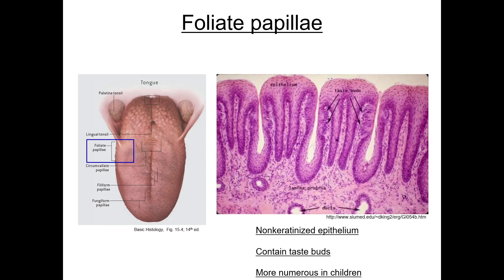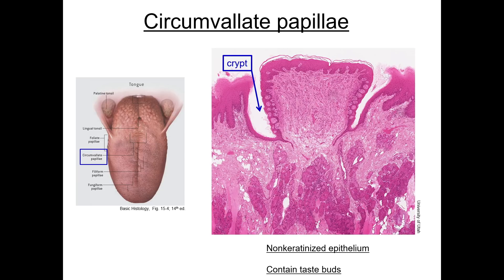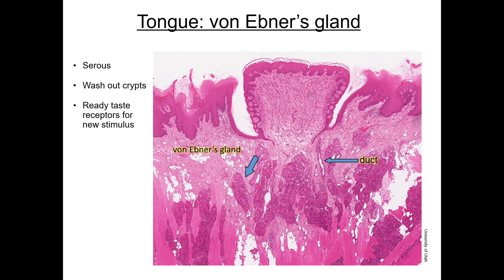Foliate papillae are rudimentary in human adults, but are basically leaf-shaped and also contain taste buds. Finally, circumvallate papillae, or wall-like papillae, are found in the posterior part of the tongue in front of the sulcus terminalis in roughly a V-shape. These are the largest papillae and they contain large crypts or grooves and abundant taste buds on their sides. The ducts of glands called von Ebner's glands empty into the grooves or crypts surrounding each papilla, allowing continuous fluid flow that washes them out so that new tastes can be detected.